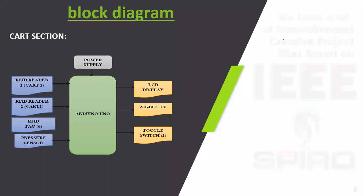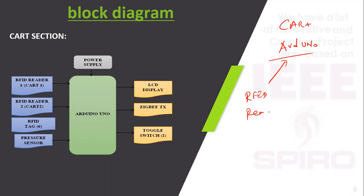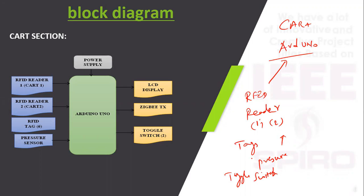Here is the block diagram. We are using one controller, which is Arduino. The inputs are an RFID Reader — we are using two cards — and RFID Tags. There is also a threshold sensor for object placement detection, and a toggle switch to place or remove items. Outputs are an LCD display and Zigbee. The system is powered using a 12V adapter or supply.